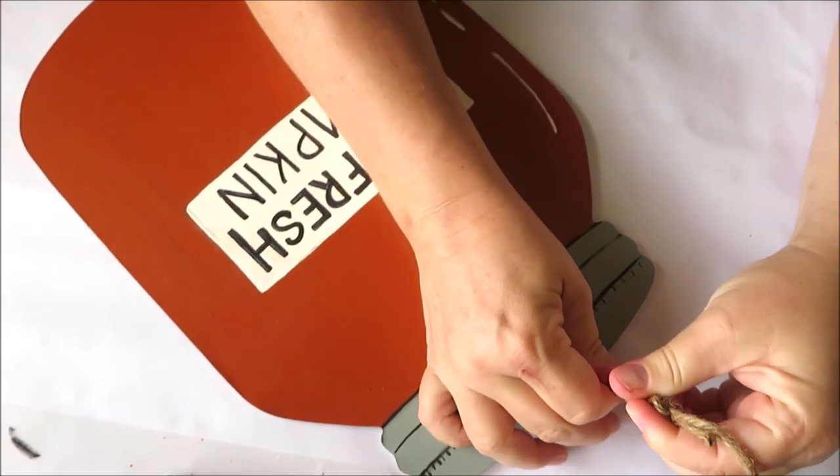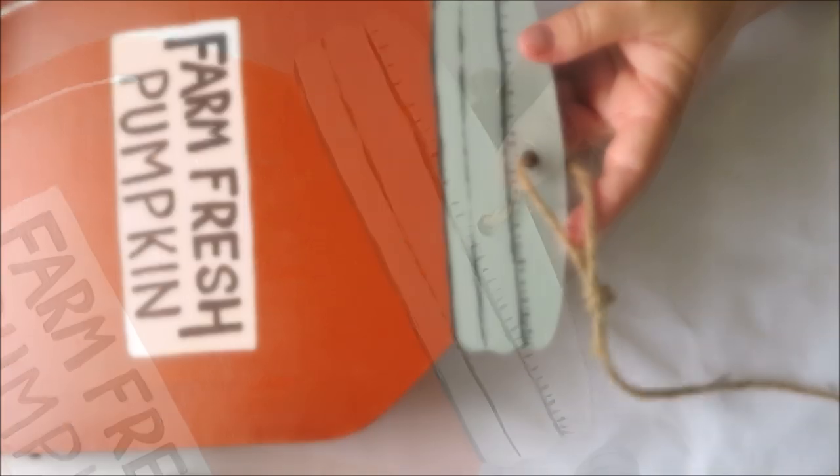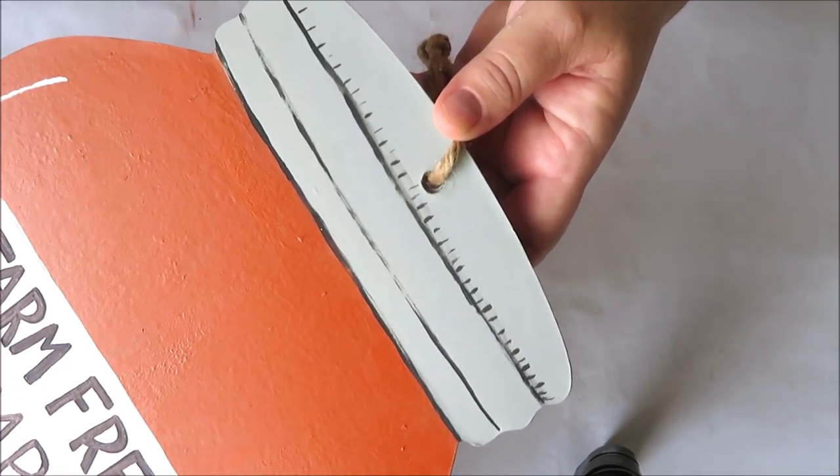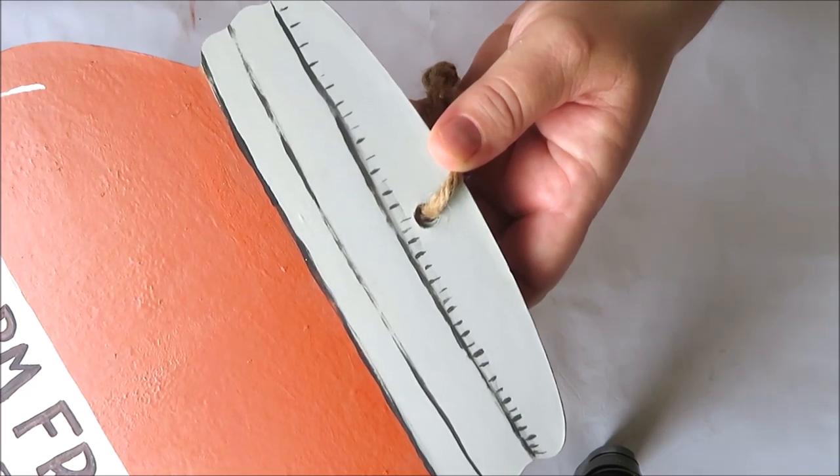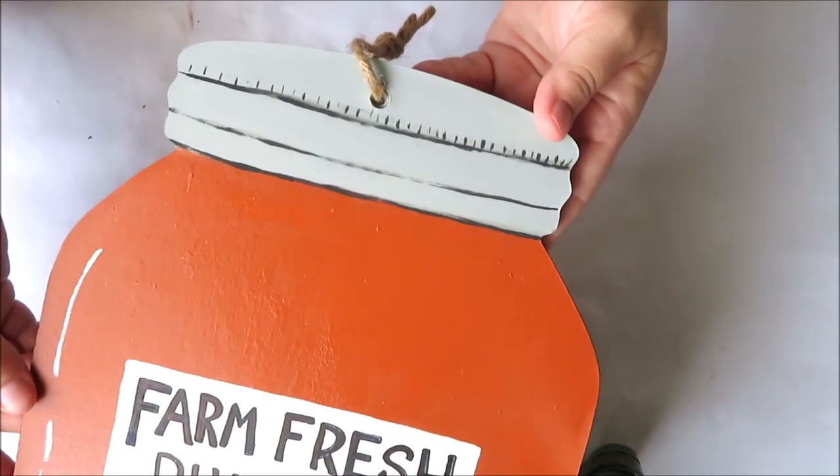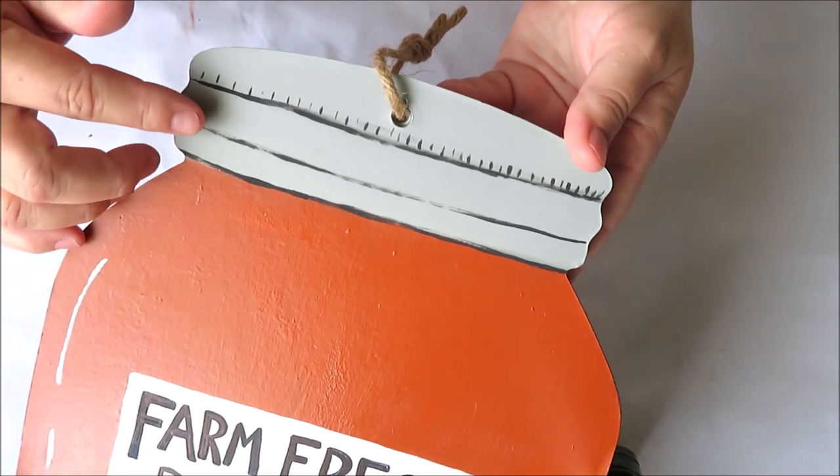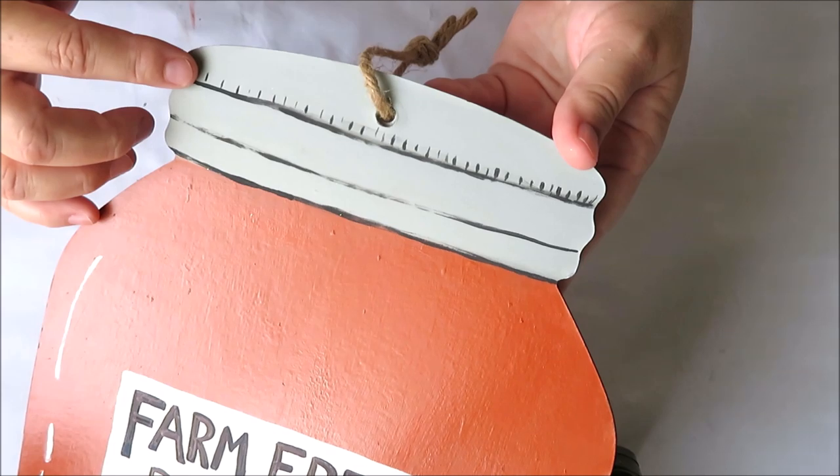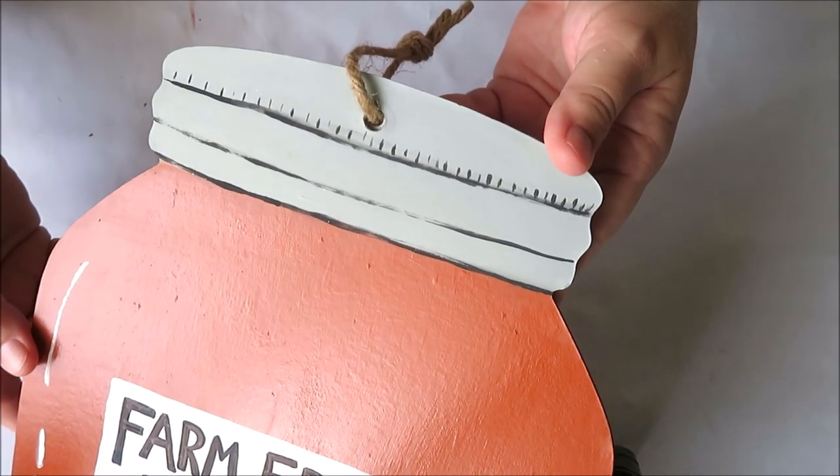And for our lid detail, so this is something I can't find the footage for. All I did was make a couple of lines and it's pretty self-explanatory. First off, I used my paintbrush and black paint to paint some horizontal lines and then I went right back in with some tiny vertical lines.